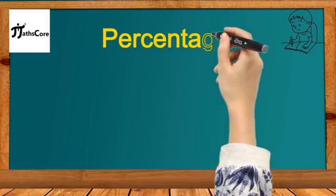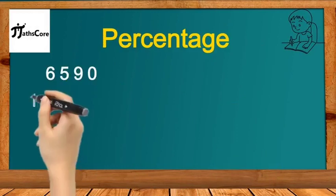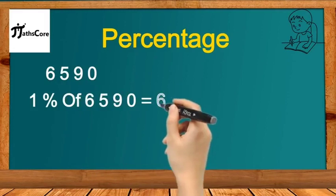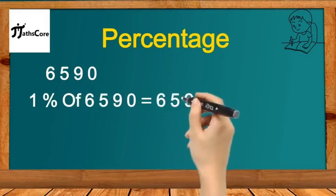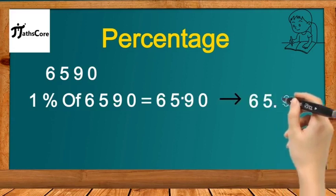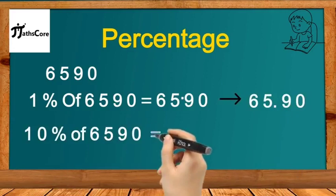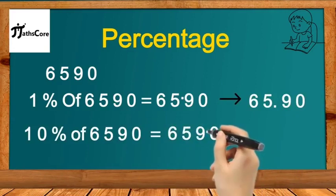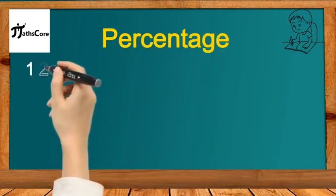Let's take one more example: 6590. To find 1% of 6590, we put the decimal point two places from the right, so 1% of 6590 equals 65.90. To find 10% of 6590, we put the decimal point one place from the right, so 10% of 6590 equals 659.